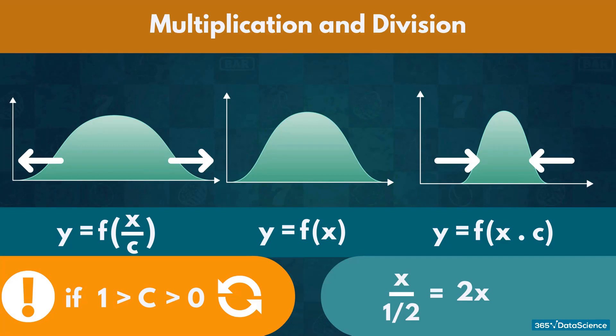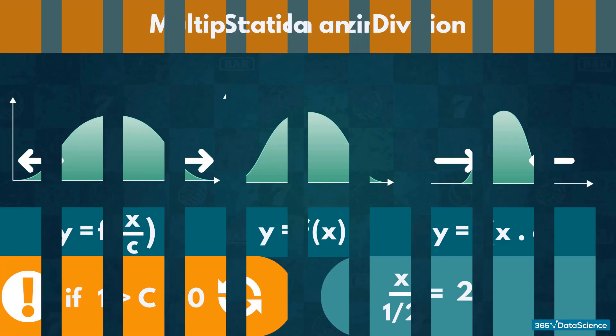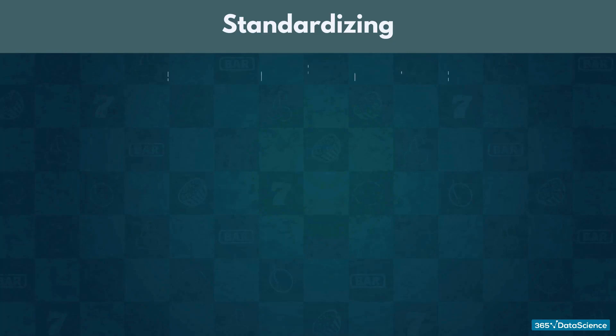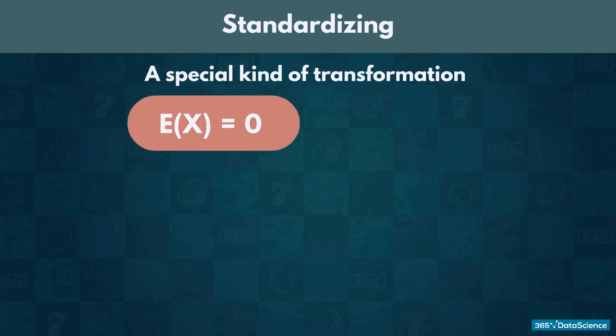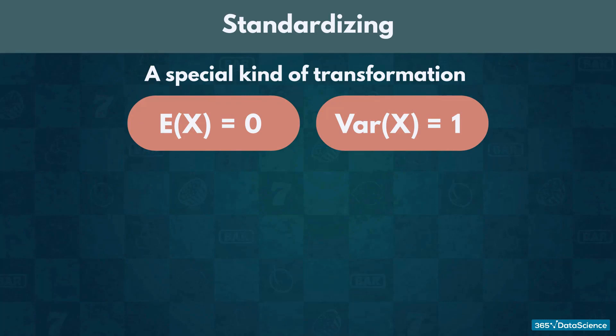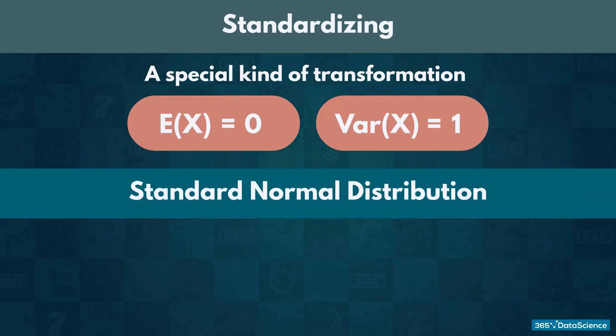Now that you know what a transformation is, we can explain standardizing. Standardizing is a special kind of transformation in which we make the expected value equal to 0 and the variance equal to 1. The distribution we get after standardizing any normal distribution is called a standard normal distribution.